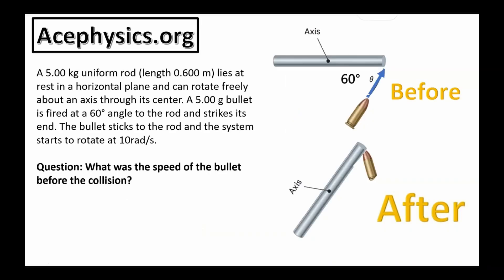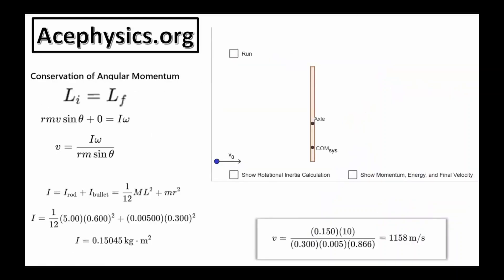Question 1: A 5-kilogram rod of length 5.6 meters lies at rest in a horizontal plane and can rotate freely about an axis through its center. A 5-gram bullet is fired at a 60-degree angle to the rod and strikes its end. The bullet sticks to the rod and the system starts to rotate at 10 radians per second. What was the speed of the bullet before the collision? To solve this problem, we use conservation of angular momentum — there is no net torque on the system, so the initial angular momentum before the collision equals the final angular momentum after.